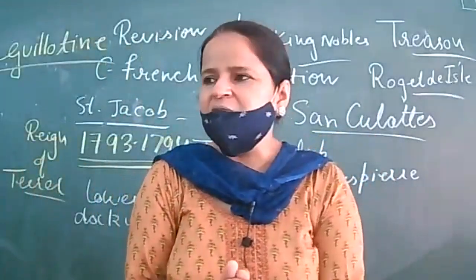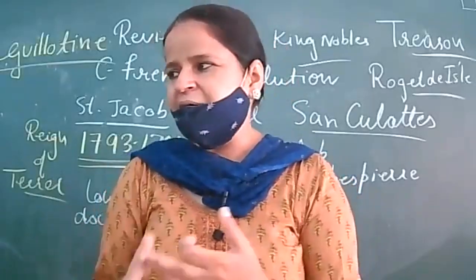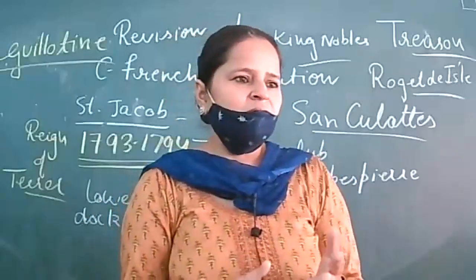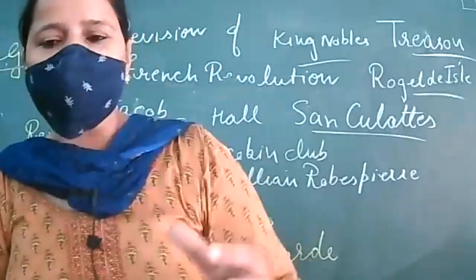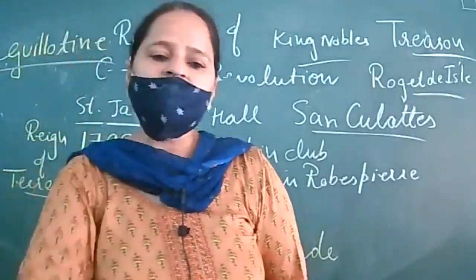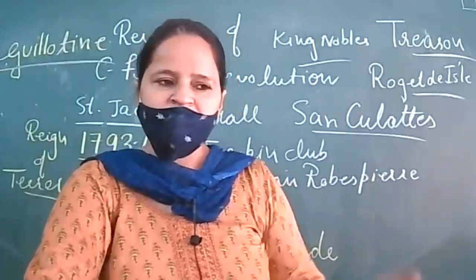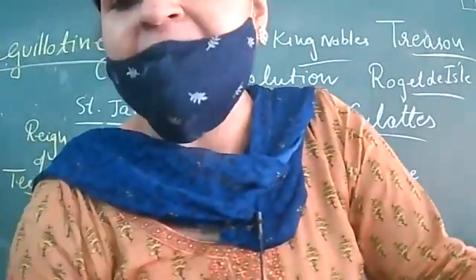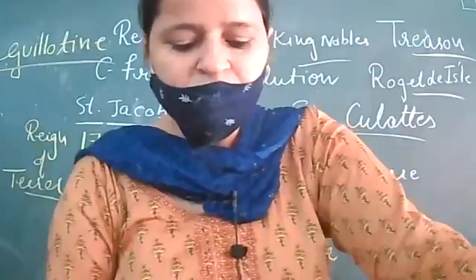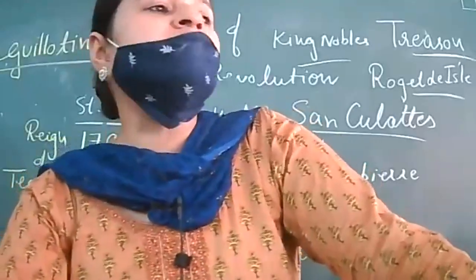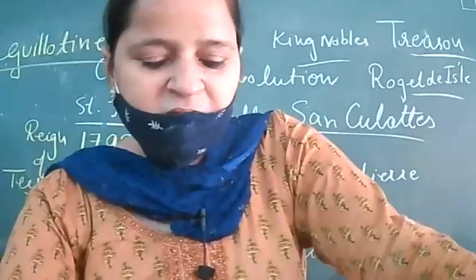Whenever we study any ruler with harsh policies — whether Robespierre, Lenin, or Stalin — we always study some positive and some negative aspects. So first, some welfare measures adopted by Robespierre. Positive: number one — he put a maximum ceiling on wages and prices. He fixed wages and prices, meaning the government set a rate and no one could charge more or less.